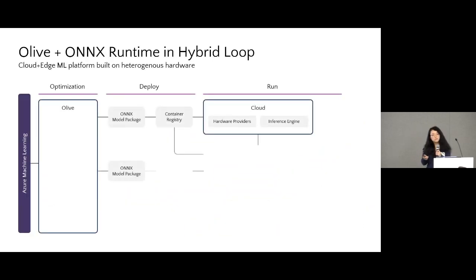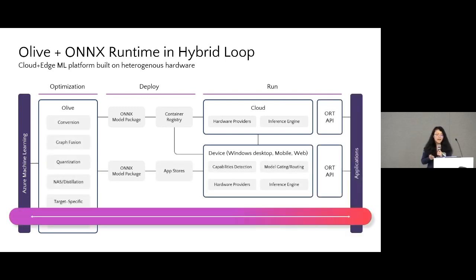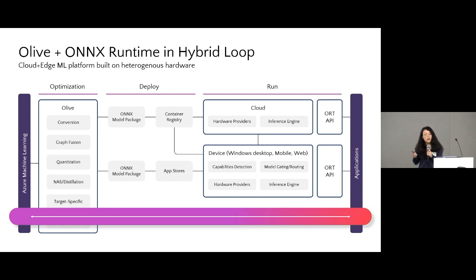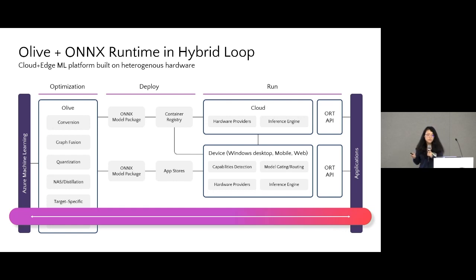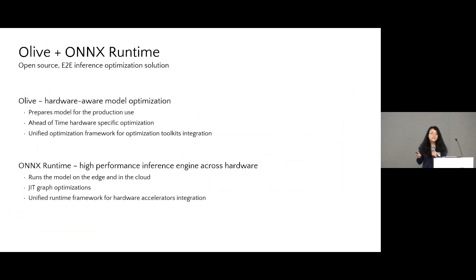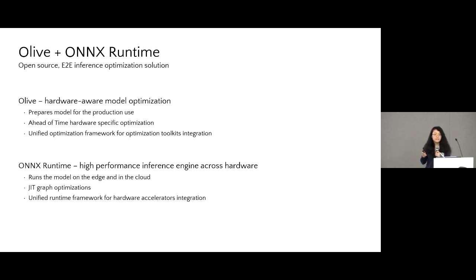Olive works together with ONNX Runtime as an end-to-end inference optimization solution supporting Microsoft's hybrid loop. With Olive, developers gain the ability to obtain the most efficient models. Once the optimal model is derived, it can be deployed with ONNX Runtime using its unified APIs across platforms. This powerful combination of Olive and ONNX Runtime ensures optimal performance across platforms. During the journey of model deployment, both Olive and ONNX Runtime play crucial roles — Olive prepares models to efficiently run with ONNX Runtime.